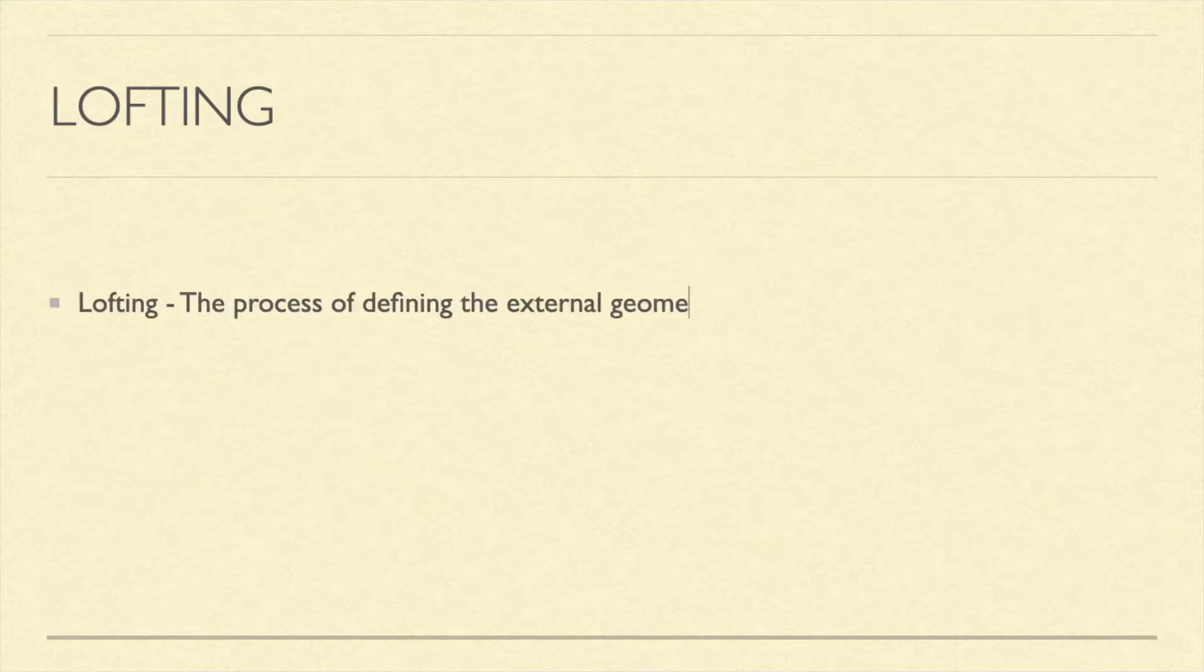The process of defining the external geometry of the aircraft is called lofting. Another term related to it is production lofting. It is the most detailed form of lofting, providing very minor details like intake and exhaust ducts of an air conditioning.